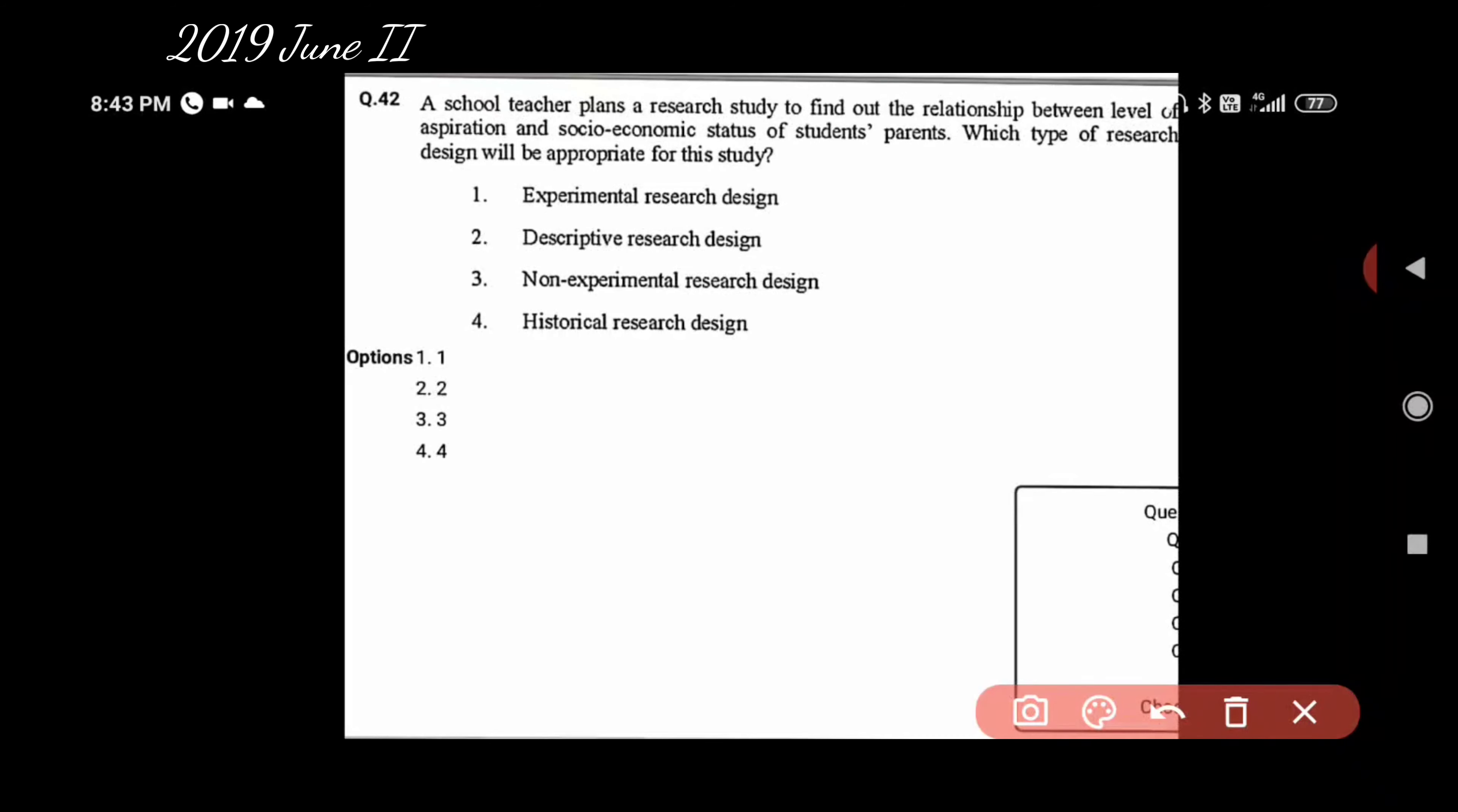Experimental research method - you cannot manipulate the level of aspiration, you cannot manipulate socioeconomic status of somebody's parents. You cannot make them rich for a day, you cannot make them poor for a day just for a mere experiment. This does not make sense. This is not historical research - we are not studying the past of anybody. This is also not descriptive research design. Our answer is non-experimental research design. And if you look closer, then this is ex post facto research design or research method, because you cannot manipulate these variables. You have no choice but to observe and study the way things are.